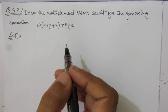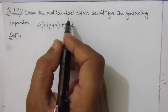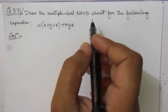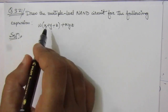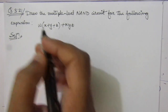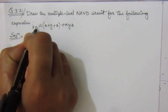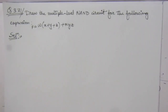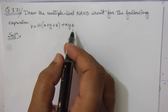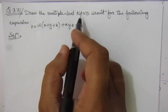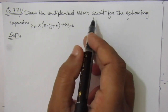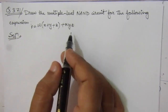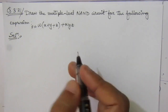The problem is: draw the multi-level NAND circuit for the following expression. We are given a function f, and we have to draw the circuit of this expression using NAND gates. NAND circuit means we have to make a circuit of this expression using NAND gates.